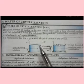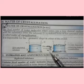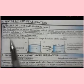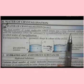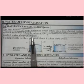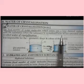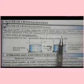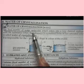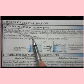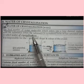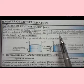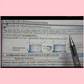Water of crystallization: some substances contain water molecules in their loose combination. Water of crystallization is a fixed number of water molecules which enter into a loose chemical combination with the substance when the substance is crystallized from its hot saturated solution. Learn this definition carefully.